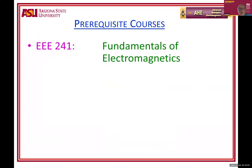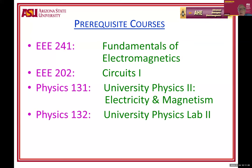What are the prerequisite courses? One that all electrical engineers must take is EEE 241, Fundamentals of Electromagnetics, along with EEE 202, Circuits 1, Physics 131, and Physics 132 which is the lab associated with Physics 131. Those are prerequisites for all electrical engineers, no matter what area you'll follow or what electives you'll take.